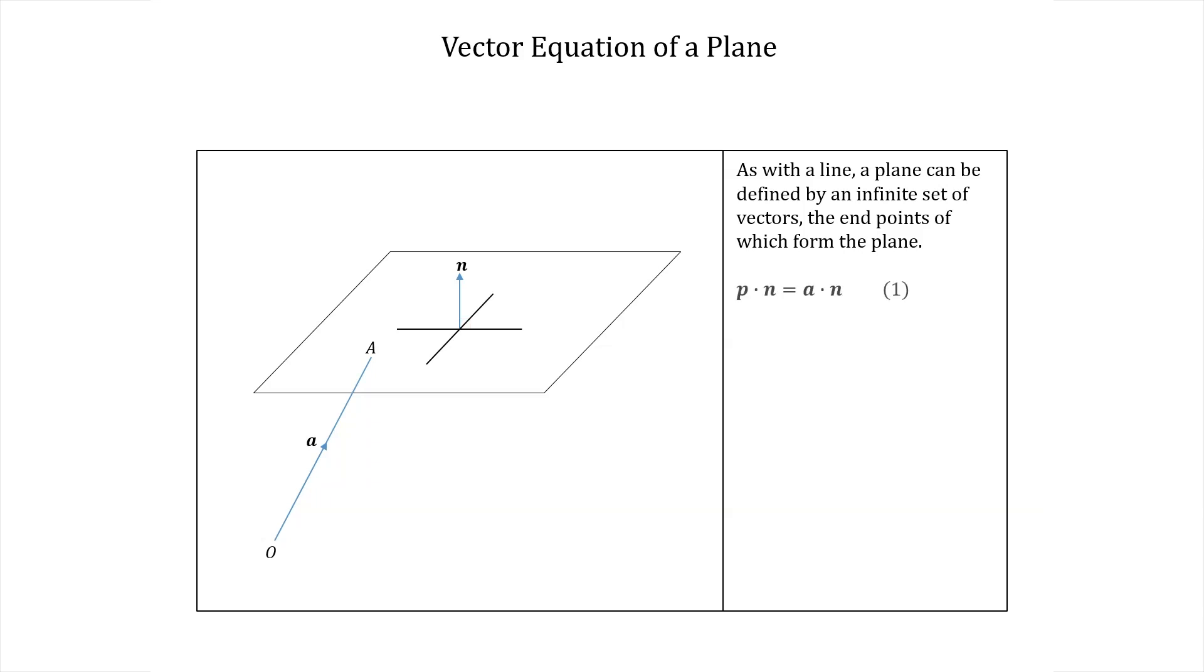Then the equation p·n = a·n defines the plane, where p varies over all vectors which satisfy this condition. That is, the set of all vectors p that satisfy equation 1 defines a plane in the sense that if all the vectors were starting at the origin their endpoints would form a plane.